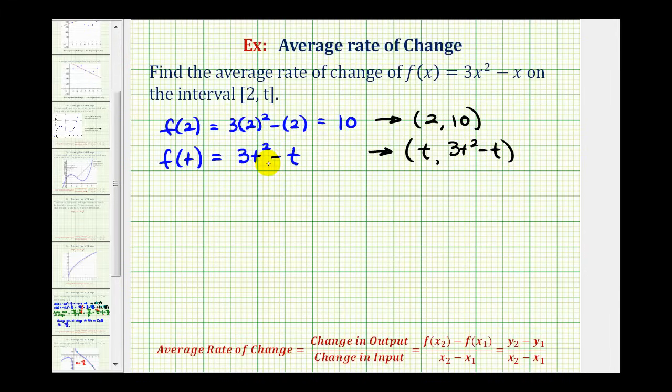Now we have the information we need to find the average rate of change. We'll first find the change in the function values or y-values. Let's get this information from our ordered pairs. The outputs are the same as these y-coordinates, so we'd have (3t² - t - 10) divided by the change in input (t - 2).